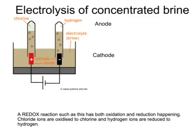Let's look at the electrolysis of concentrated brine. At the anode, which is the positive electrode, chloride ions and hydroxide ions are attracted. The chloride ions are the ones which get involved in electrolysis and which are discharged. Chloride ions are Cl⁻.